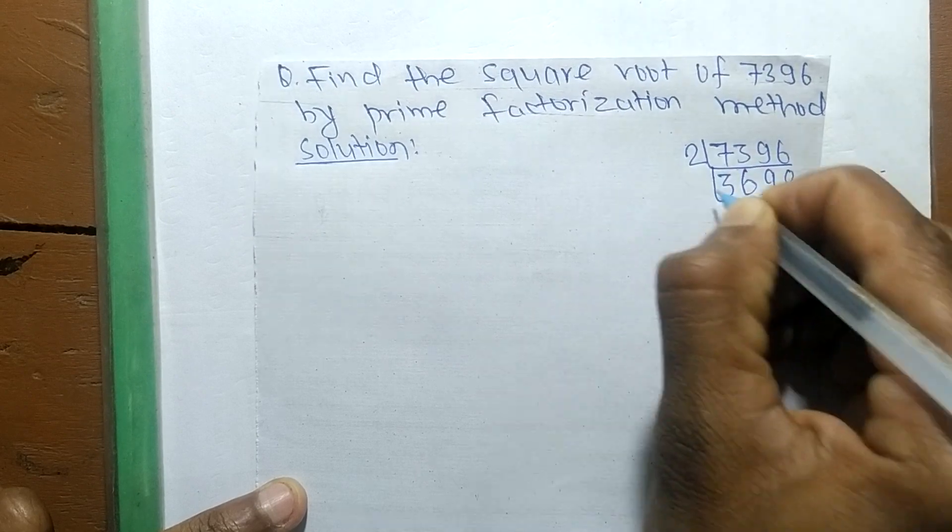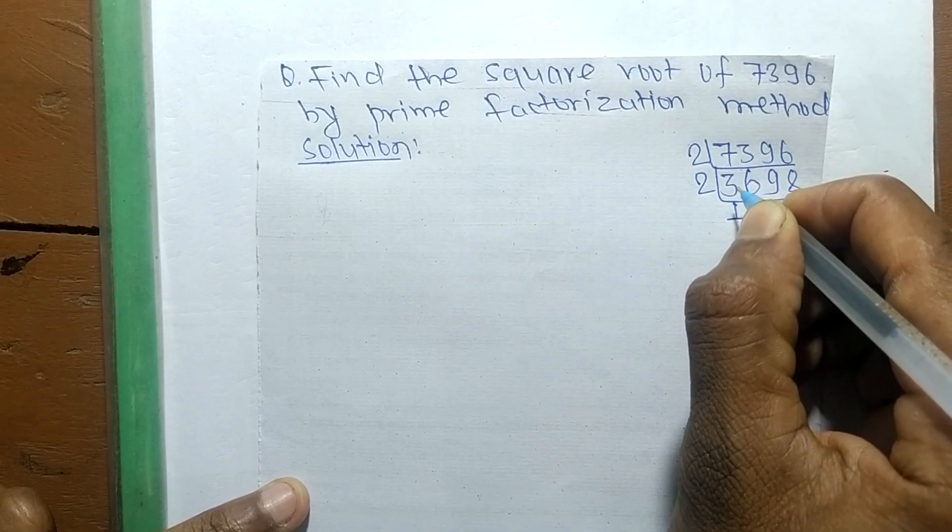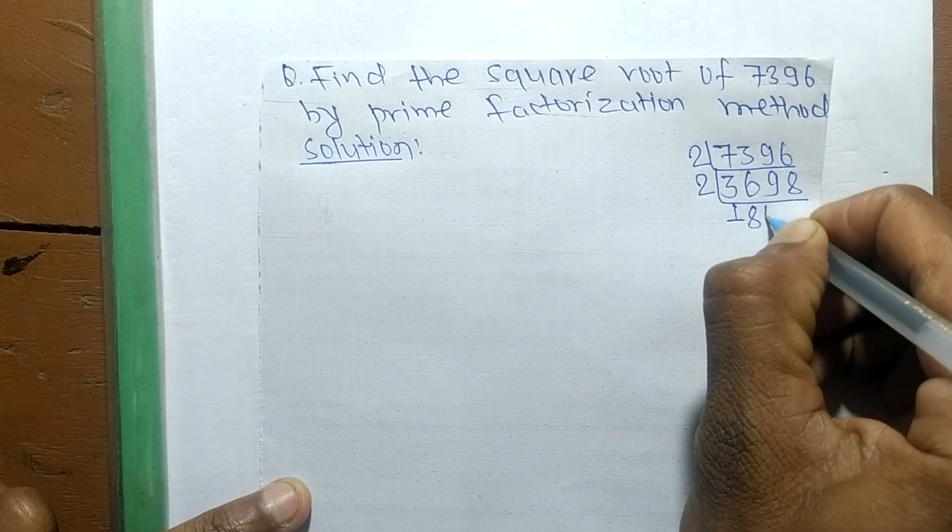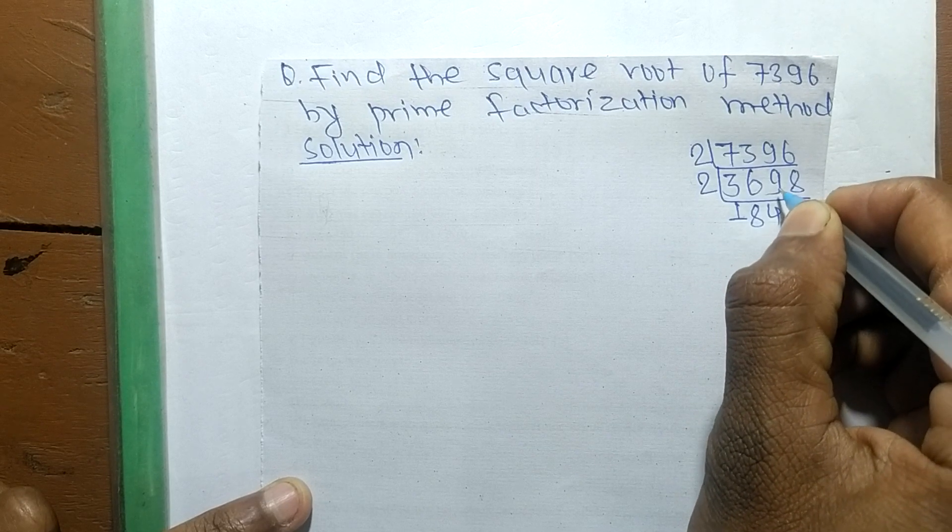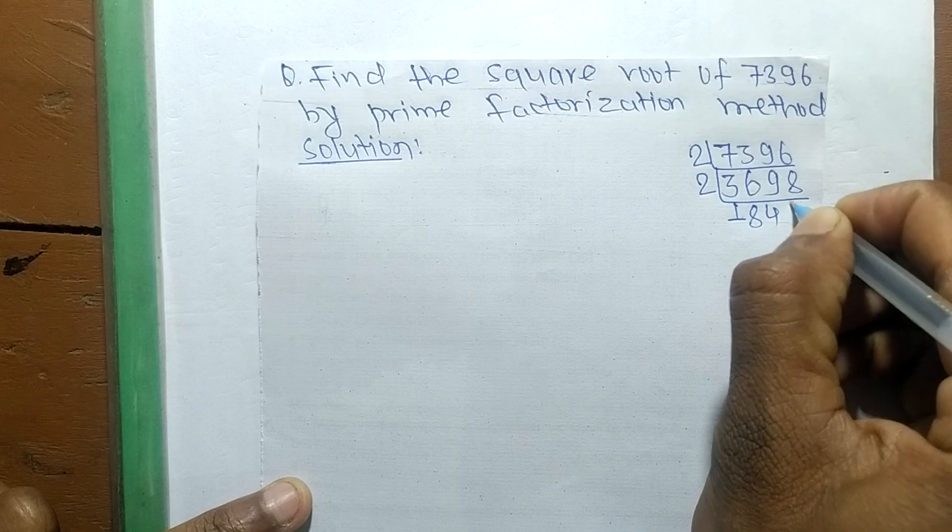We continue dividing by 2: 2 times 1 is 2, remainder 16, 2 times 8 is 16. Now 9, 2 times 4 is 8, remainder 18, 2 times 9 is 18.